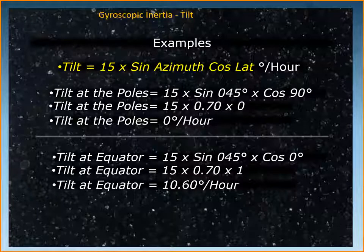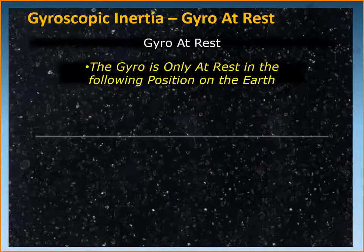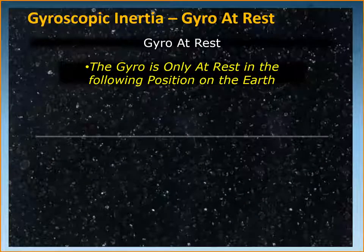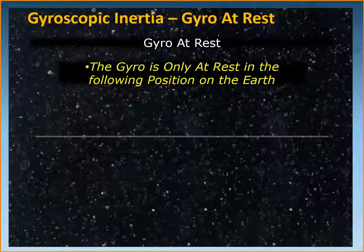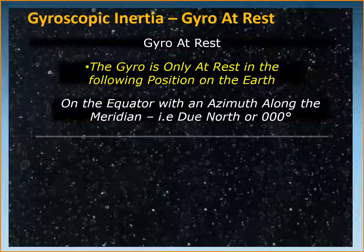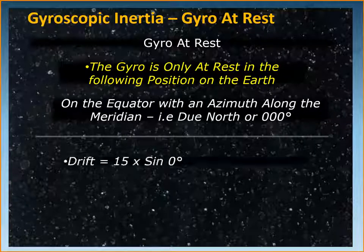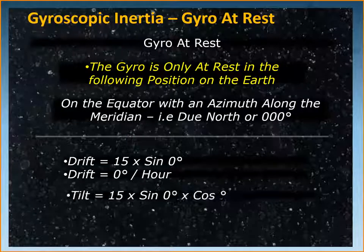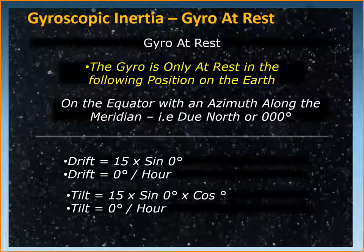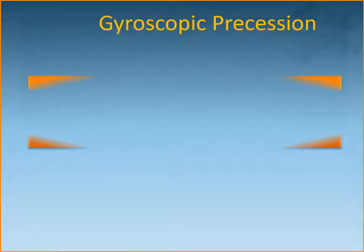The gyro will be at rest — meaning there will be no drift and no tilt — only in one specific position on Earth: when placed at the equator with its azimuth along the meridian, that is, with the gyroscope axis pointing due north at 000°. Only then will both drift and tilt equal zero. That is the only time the gyro will be at rest on the surface of the Earth.